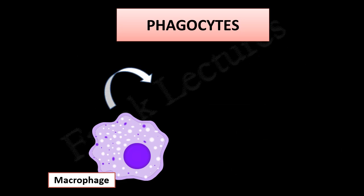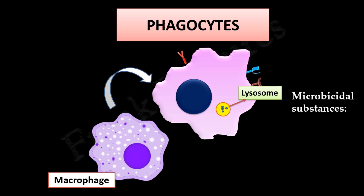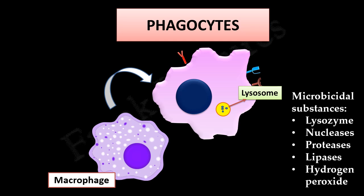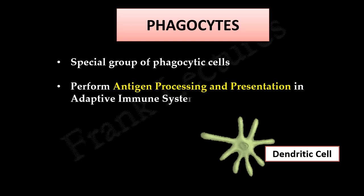For this purpose, phagocytes are equipped with intracellular compartments such as lysosomes, which contain microbicidal substances. These microbicidal substances include enzymes such as lysozyme, nucleases, proteases, lipases, or substances such as hydrogen peroxide. Dendritic cells are a special group of phagocytic cells since, besides performing antigen processing, they also perform antigen presentation, which we will study in adaptive immunity.